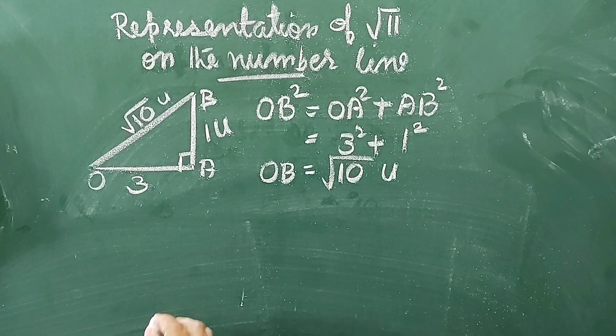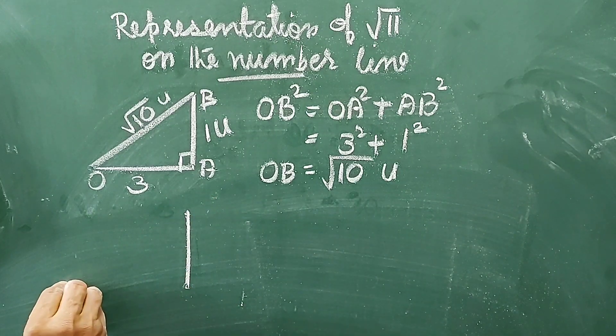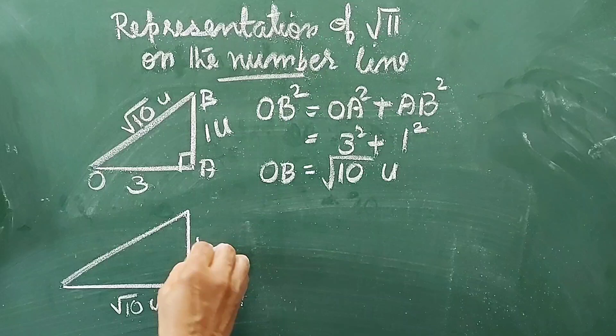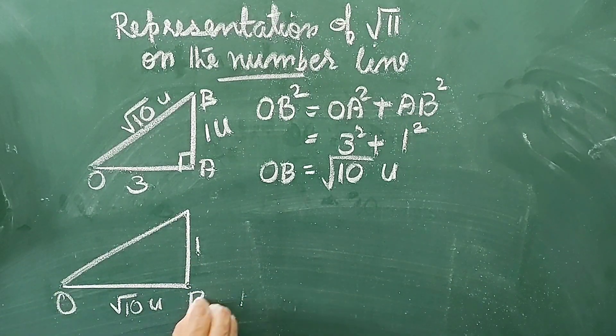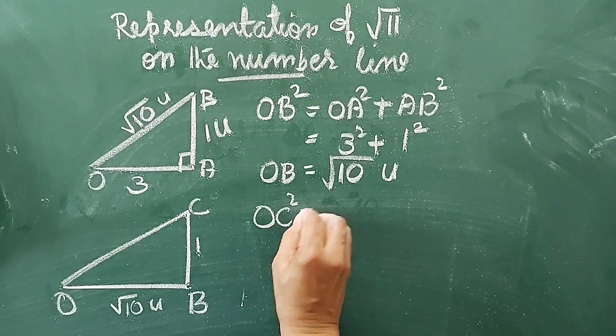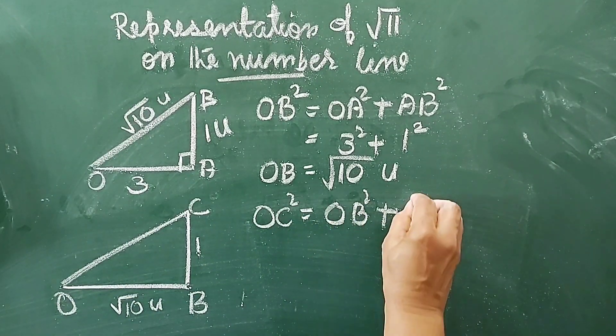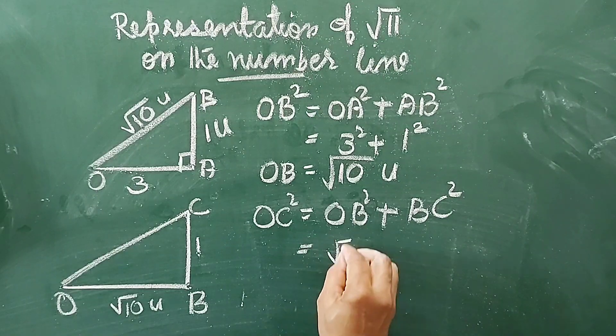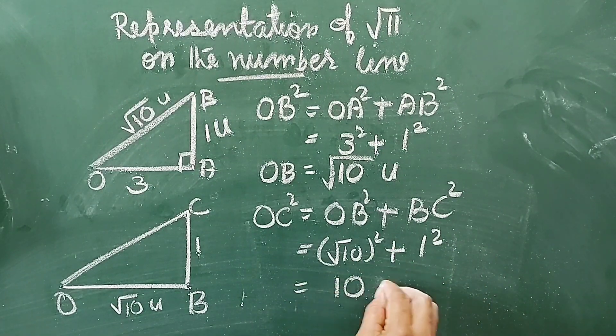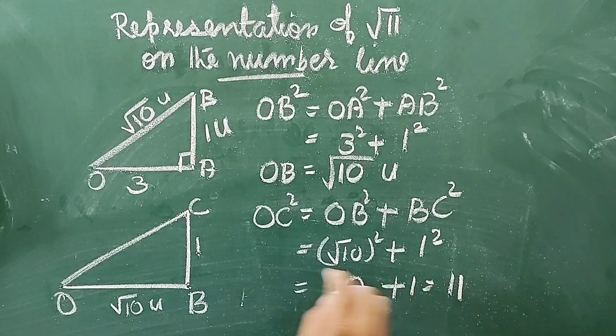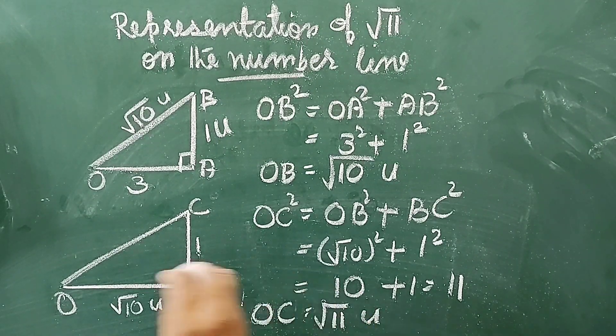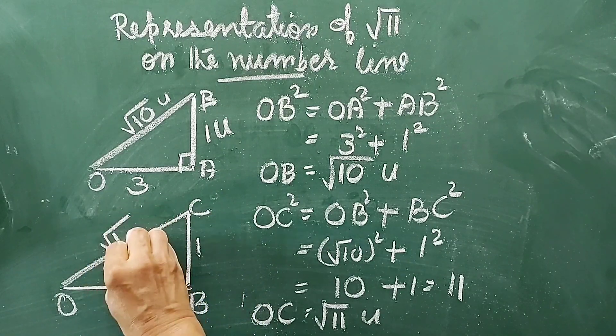Now, let us consider another right-angled triangle with height as 1 unit and base as √10 units, that is triangle OBC. Now, by Pythagorean theorem, we know OC² is equal to OB² + BC², that is equal to (√10)² + 1² = 10 + 1 = 11. That is OC² is 11, so OC is equal to √11 units. That is, this OC represents √11.